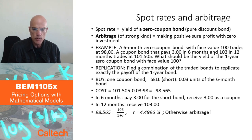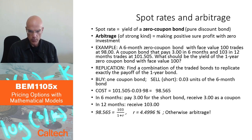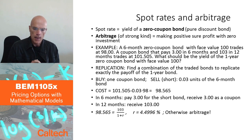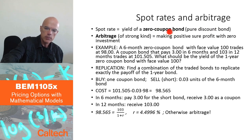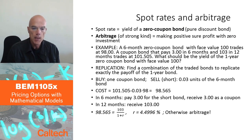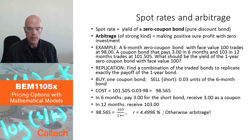Let me do our first numerical examples of arbitrage in this deterministic world, starting with bonds and rates. Here is an example: I will have a zero coupon bond, also called a pure discount bond — that's the name for a bond which doesn't pay coupons, only pays the face value at maturity. The spot rate of such a bond is the yield of that zero coupon bond.